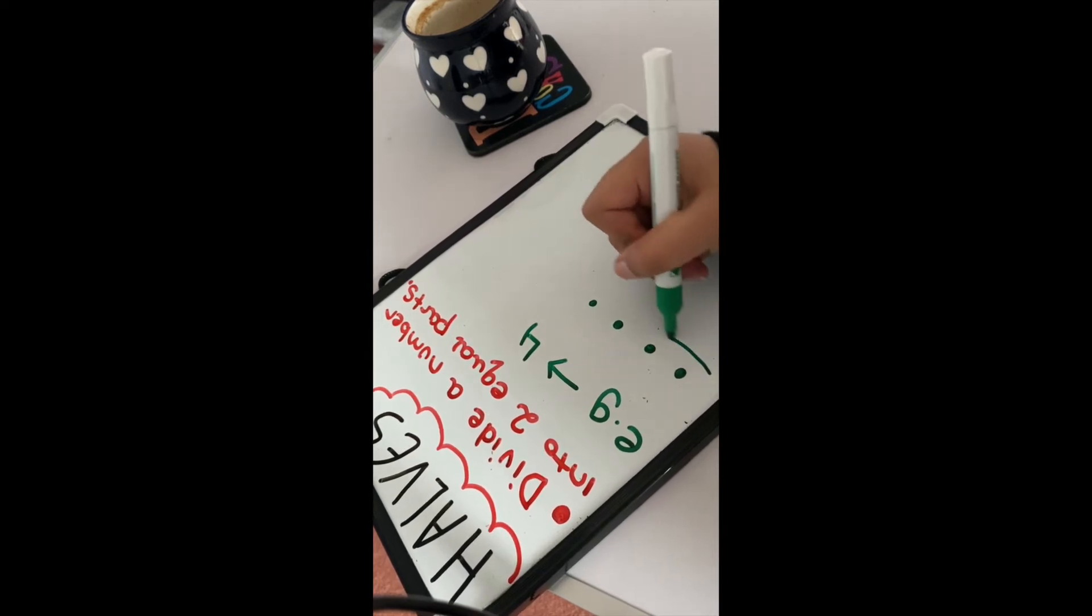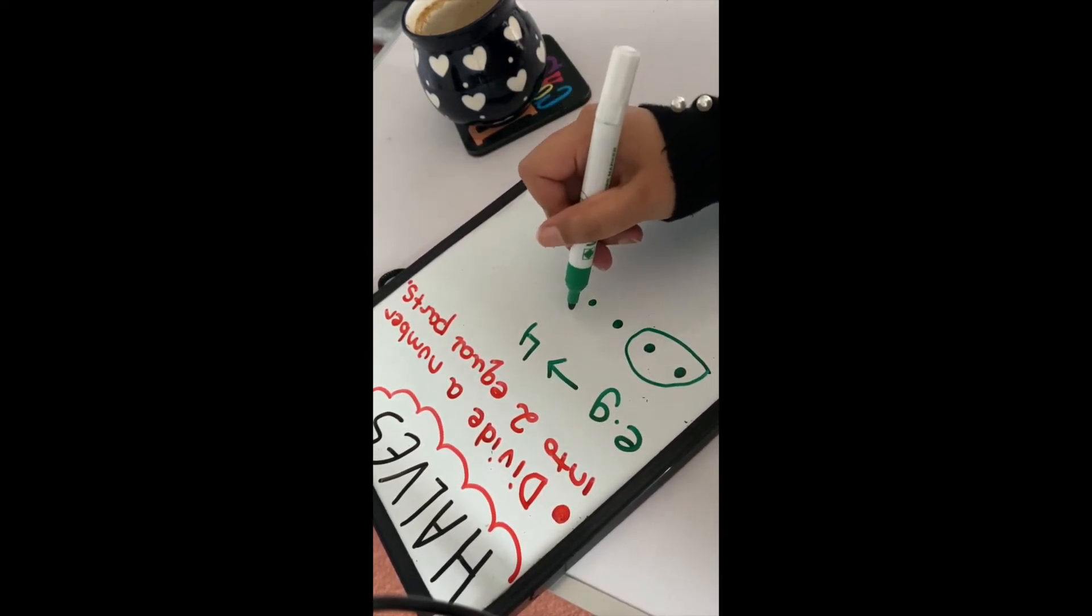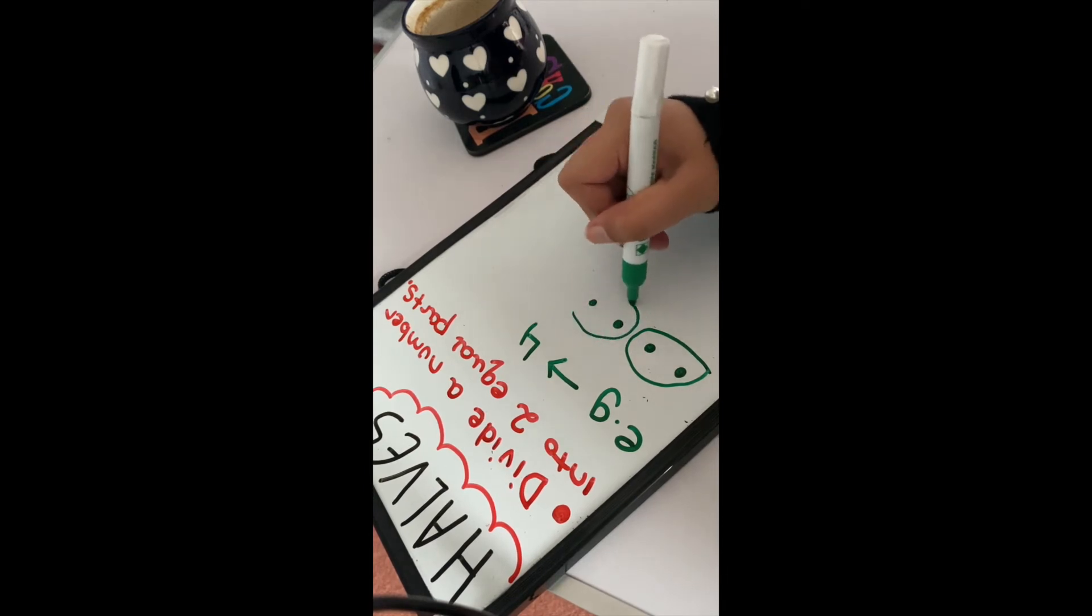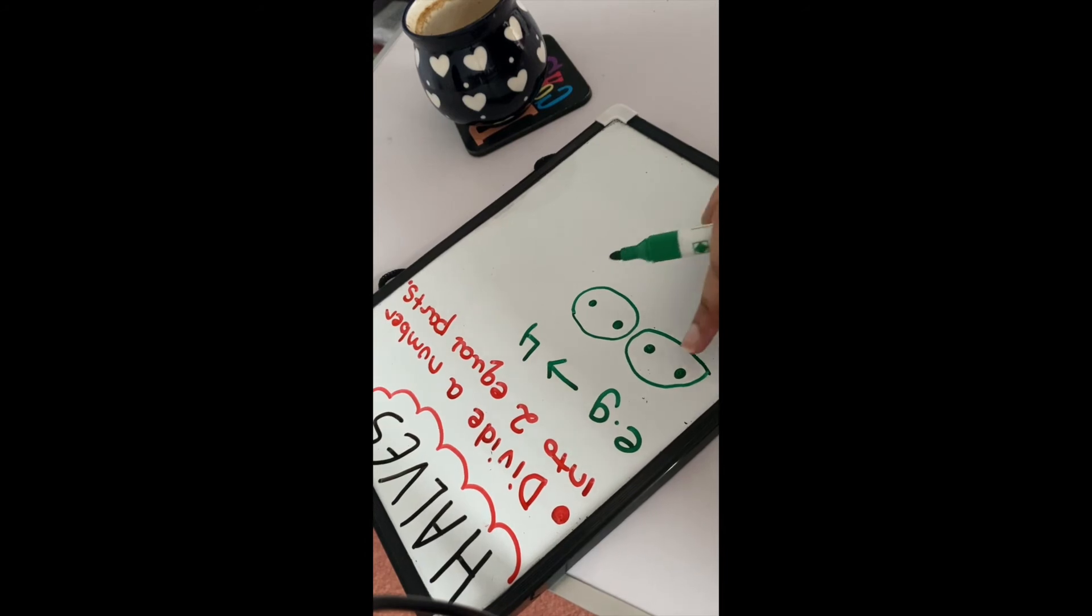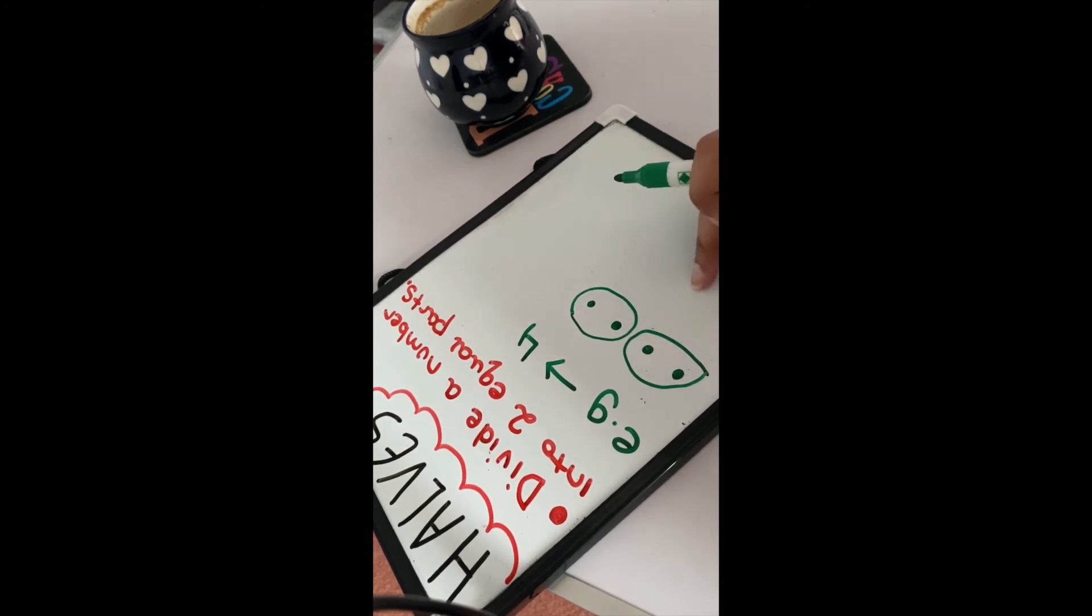And what you can do is you can count in your twos. You can go one, two, one, two. So we know that there are two parts.